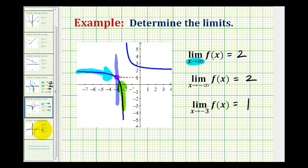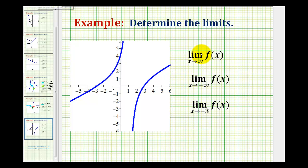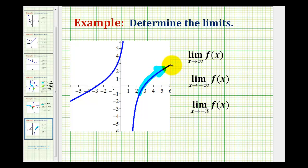Let's take a look at three more examples. First, we have the limit as x approaches positive infinity of f of x. So we're on the function and moving to the right as x approaches positive infinity. Notice how there is not a horizontal asymptote — it looks like there's actually a slant asymptote. The idea here is that the function will increase without bound, and therefore as x approaches infinity, the function will also approach positive infinity, and therefore the limit does not exist.